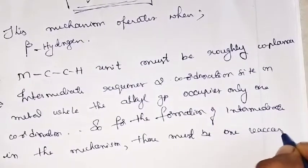So, beta hydrogen transfer mechanism will occur when there is a presence of beta hydrogen, when the M-C-C-H unit is roughly coplanar so that the beta hydrogen is brought closer to the metal and M-H formation becomes easier, and when the intermediate requires two coordination sites — one occupied by the alkyl group, another by hydrogen.